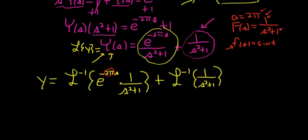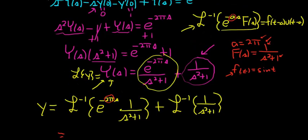So this is equal to, scroll back up so you can see the formula. There we go. This is equal to, so this one first. So it's going to be f of t minus a. So that's f of t minus 2π. That's going to be sine of t minus 2π.